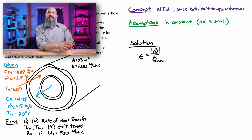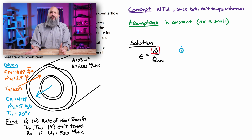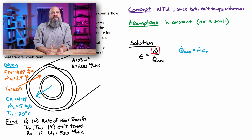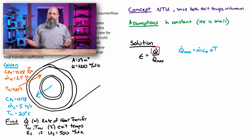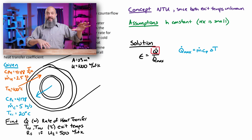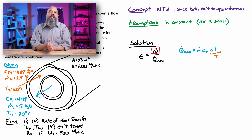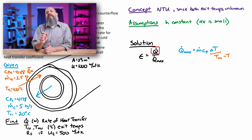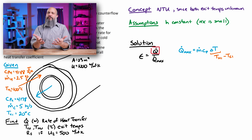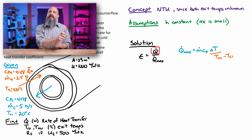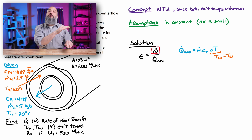Q_dot is what we're looking for, so we need to solve for effectiveness and Q_dot_max. The maximum rate of heat transfer is M_dot × Cp × delta_T for a single fluid flow. The maximum possible change in temperature in this case is T_hot_in minus T_cold_in — this is similar to how UA × delta_T equals Q_dot, where delta_T compares temperatures between two different flows.